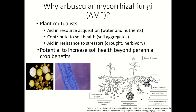AMF can help the growth of their host plant in many ways, including aiding in resource acquisition — they can actually act as an extension of their host plant's root system, helping gather water and nutrients. They're well known for accessing phosphorus that's not readily available to plants. They also contribute to soil health metrics such as aggregate stability, and can aid in resistance to stressors such as drought and herbivory. In exchange for all these potential benefits, the host plant provides photosynthates or sugars to the fungus.